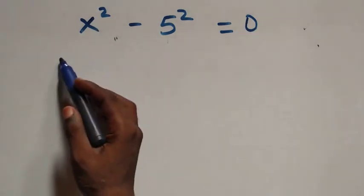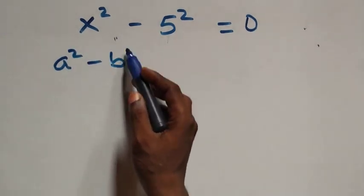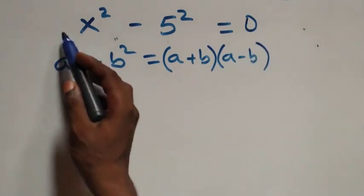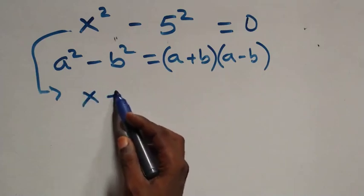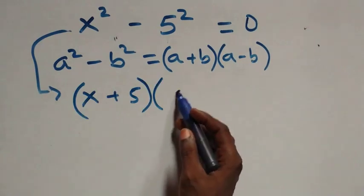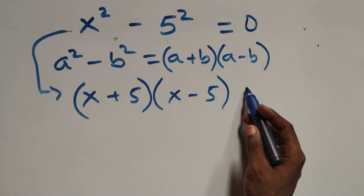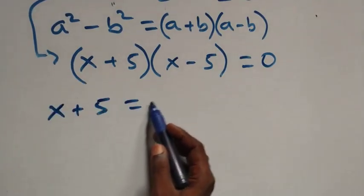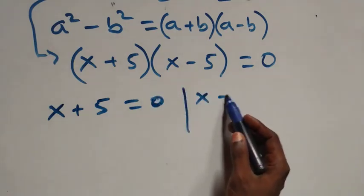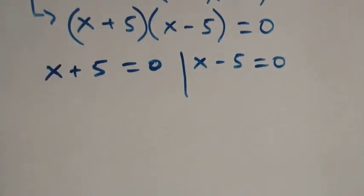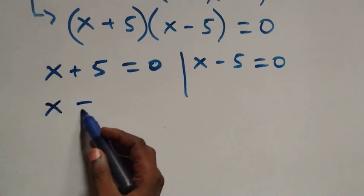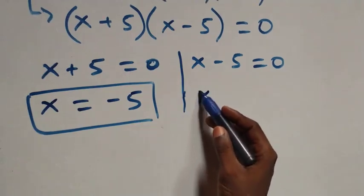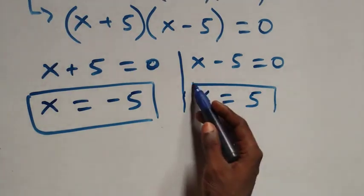Solving from the second case, x squared minus 5 squared equals to 0. This follows a squared minus b squared equals (a plus b)(a minus b). So we have (x plus 5)(x minus 5) equals to 0, giving two cases: x plus 5 equals to 0, so x equals minus 5, which is a real solution; or x minus 5 equals to 0, so x equals to 5, which is also a real solution.